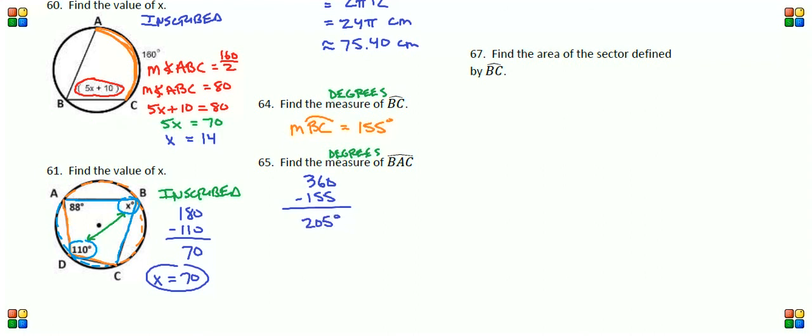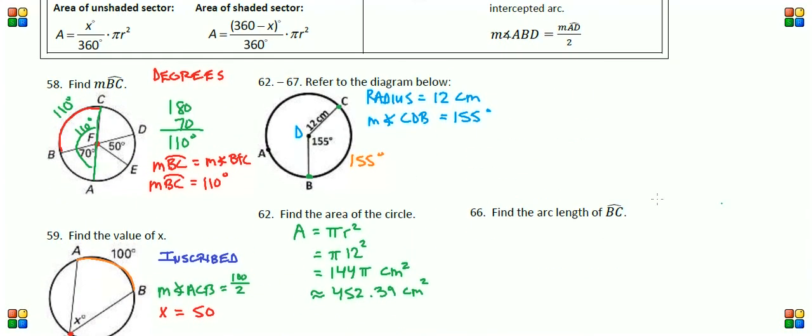So that means the measure of arc BAC is equal to 205 degrees. I'm going to go ahead and label that on our diagram. This is 205 degrees.